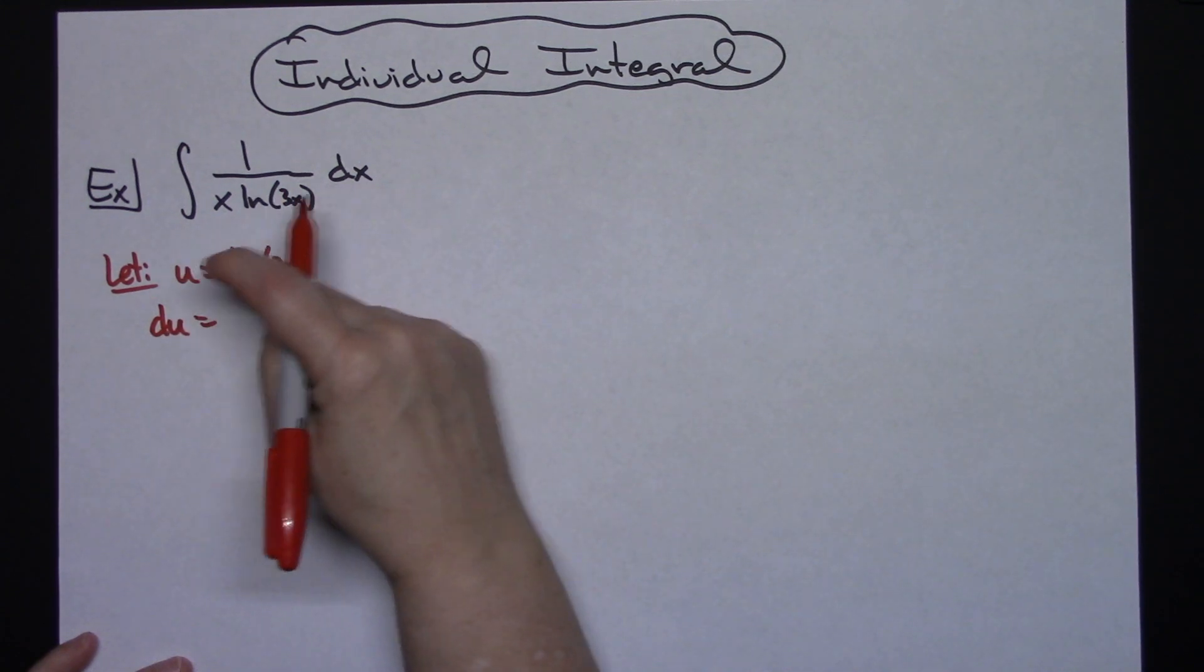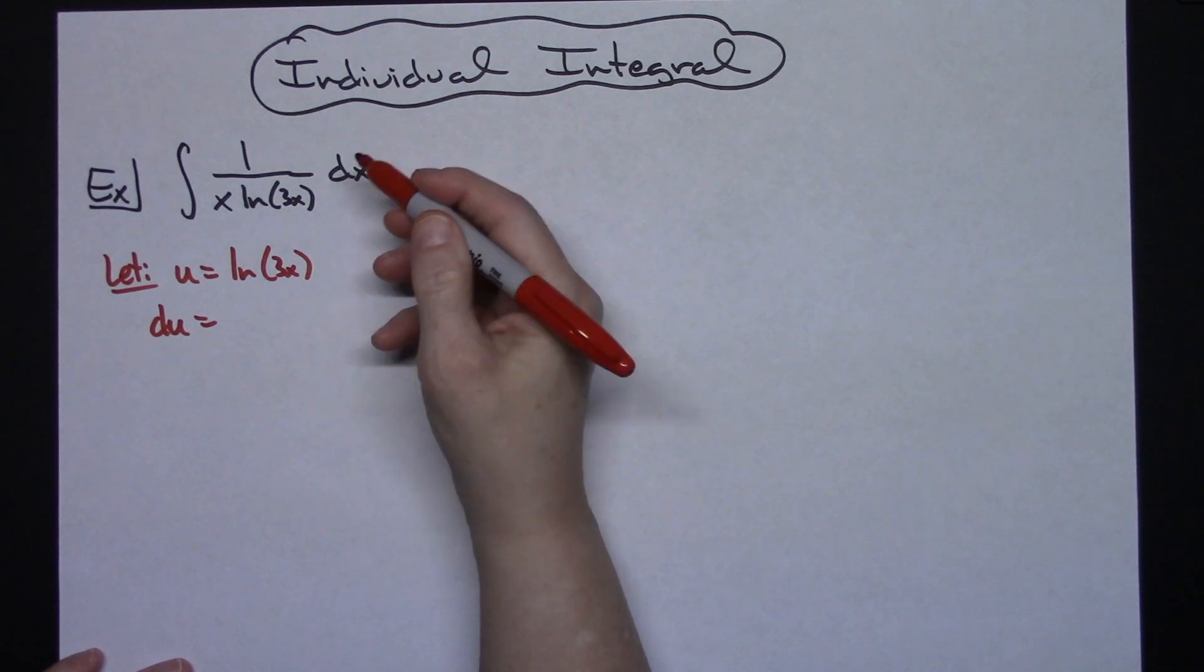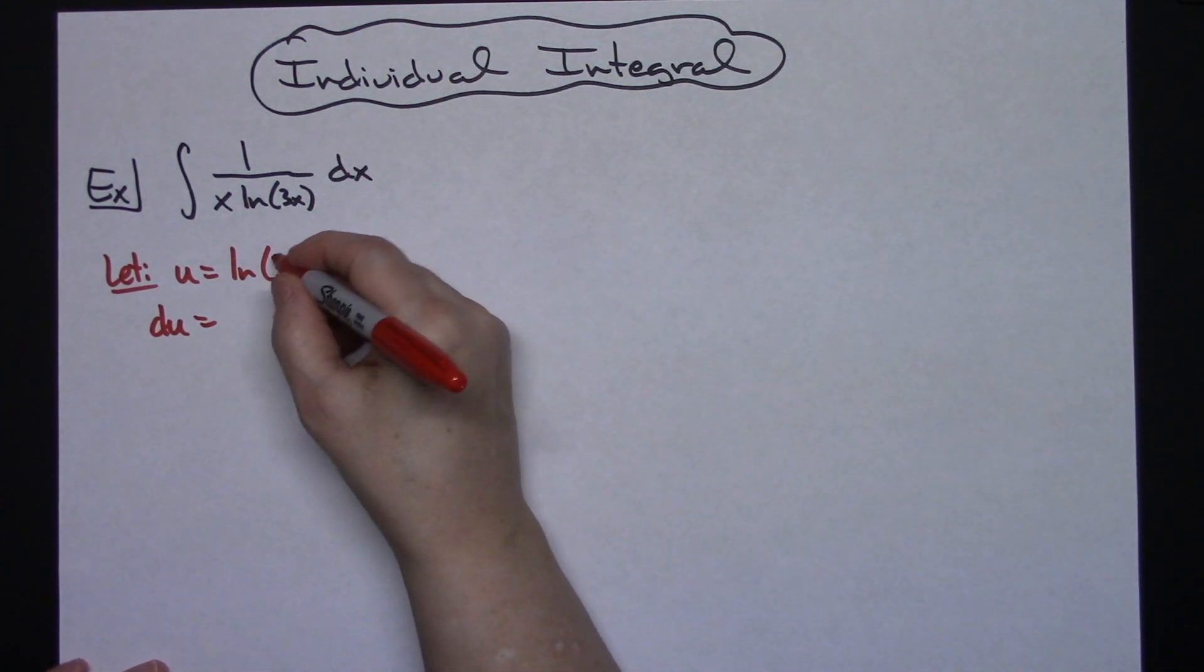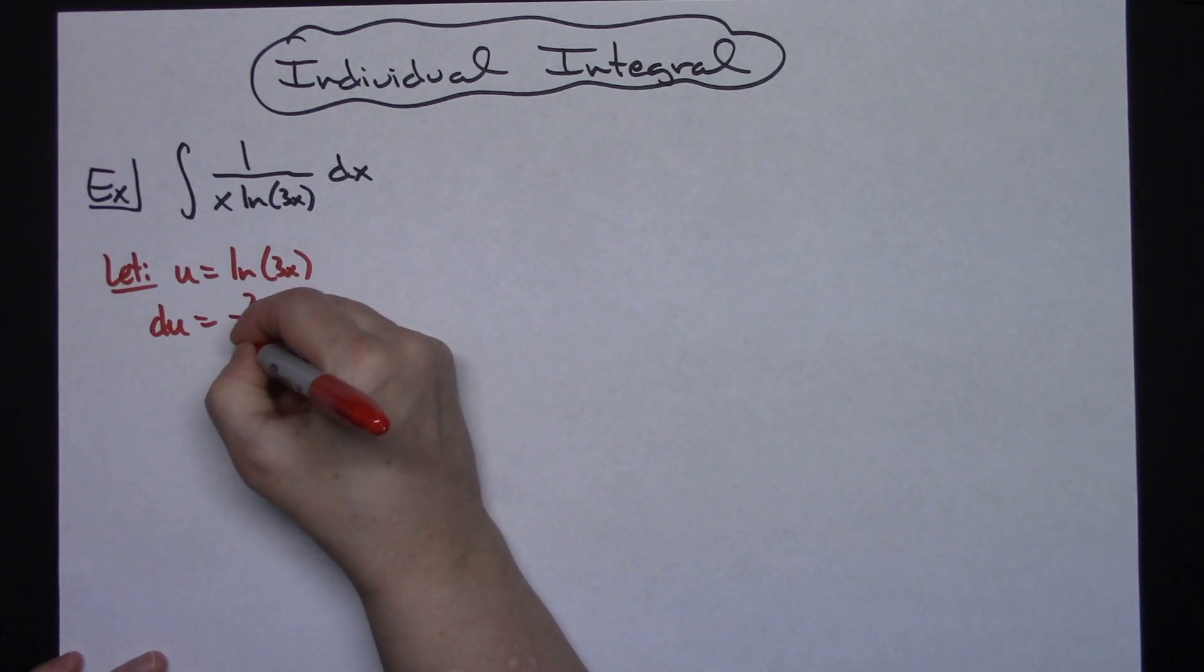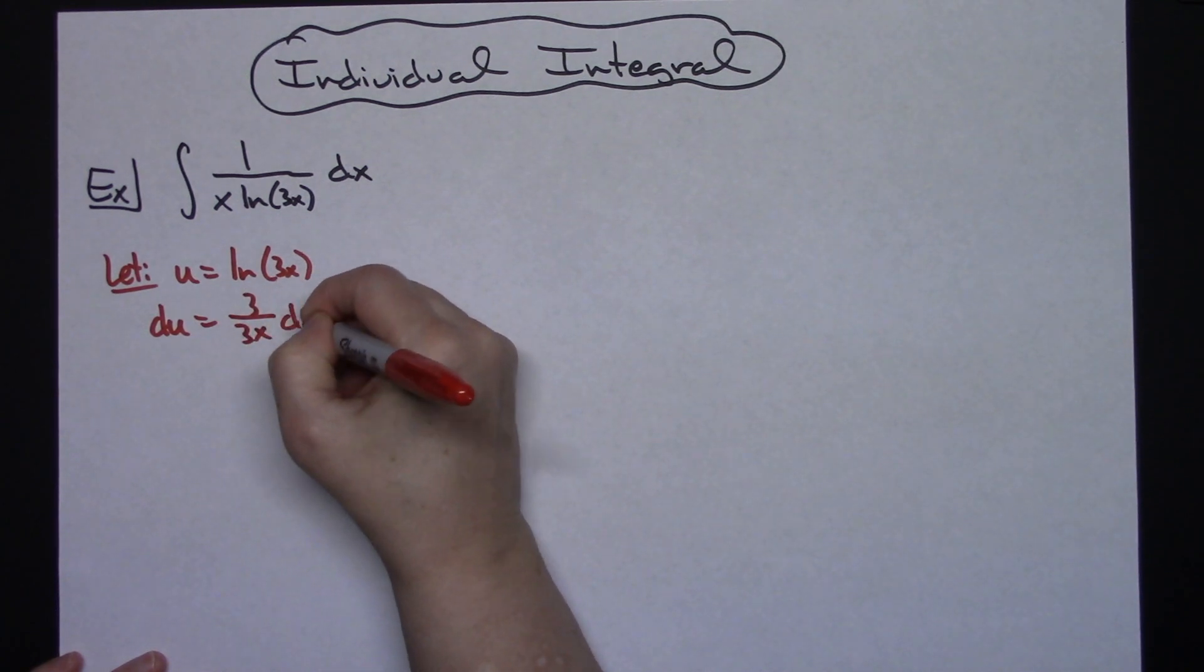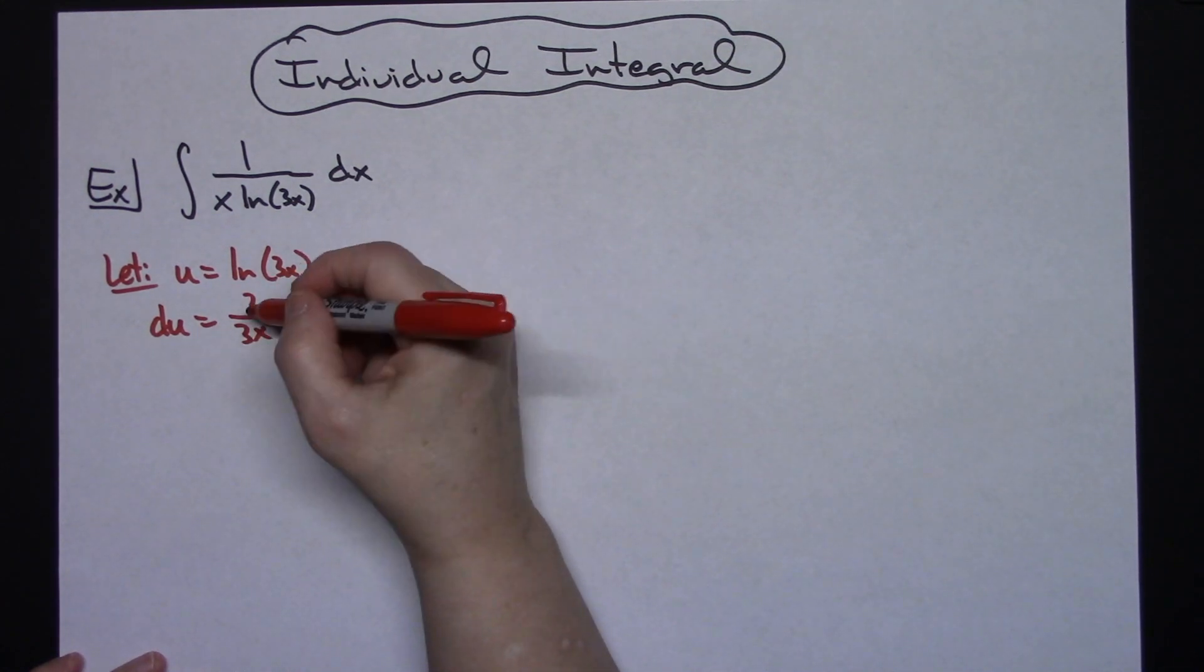So I'm going to have du. The derivative of natural log, if this were u, it would be u prime over u. Hopefully you have that memorized. So the derivative of 3x is 3 over that 3x, and then dx. We can clearly see there that it's going to just be 1 over x because your 3s are going to cross out.